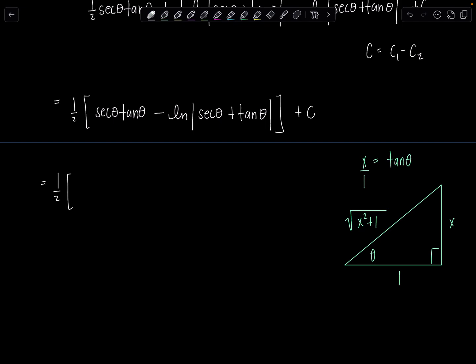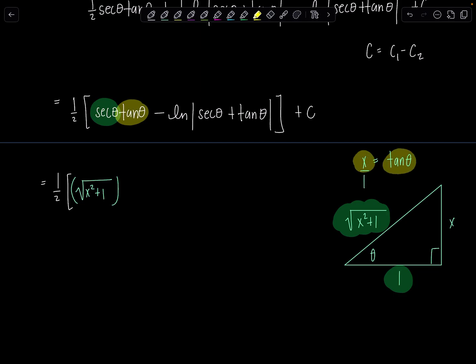So then from here, we've got 1 half secant theta is the ratio of the hypotenuse over the adjacent side. So that's going to be square root of x squared plus 1 times tangent theta. Well, we have tan theta. It's just x. Or you could look at the triangle again if you're like, I drew this triangle, let me use it to the max. Minus ln absolute value. Well, we know what secant theta is. We just found it. Square root x squared plus 1 plus tan theta's x plus c.